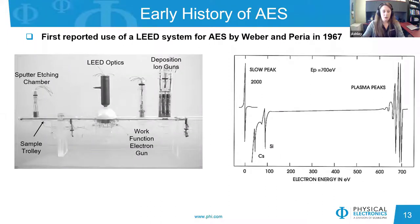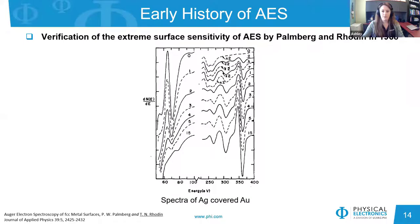Then in the late 60s, Palmberg's low energy electron diffraction apparatus was used for Weber and Peria's early Auger work at the University of Minnesota, and this apparatus can still be seen in our lobby in Chanhassen, Minnesota today. This advancement allowed surface chemical analysis to be coupled with the more widely available LEED instrument. Then in 1968, Palmberg and Rodin verified the extreme surface sensitivity of Auger spectroscopy by monitoring the increasing silver signal and decreasing gold signal as silver monolayers were deposited on gold, allowing them to determine the Auger electron escape depth.